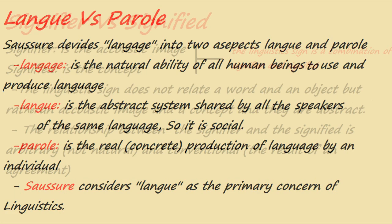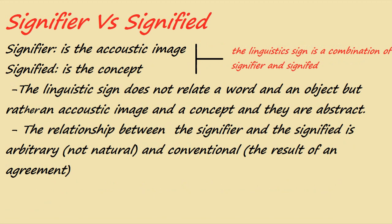The second dichotomy is signifier versus signified. The signifier is the acoustic image; the signified is the concept. To exemplify: take the word 'book.' When you say 'book,' it is related to parole — it is a realization of language. When you hear it, it is called the acoustic image. When you relate it to something you already know, that is the concept — the signified. The signifier is the actual realization of the word and how the receiver hears it.